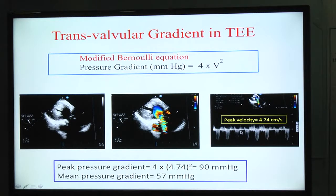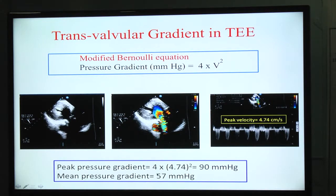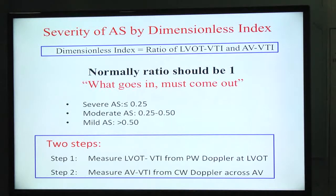Not only the peak gradient — we can also obtain the mean gradient by tracing the entire CW Doppler spectrum from beginning to end. In this case, the mean gradient is 57 mmHg. The mean gradient correlates well with catheter-derived gradients and is always used when commenting on aortic valve stenosis severity. A mean gradient greater than 40 mmHg indicates severe aortic stenosis.